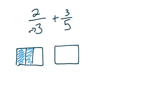And then I'm going to partition the second rectangle into fifths horizontally. So one, two, three, four, five.